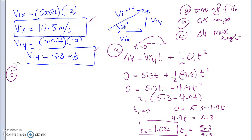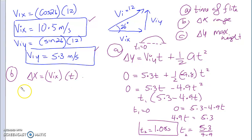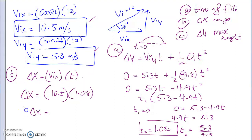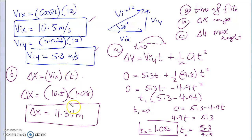Part B: how far away did it land? Delta x = vix × t = 10.5 × 1.08 = 11.34 meters. That is the range — how far away the object lands.